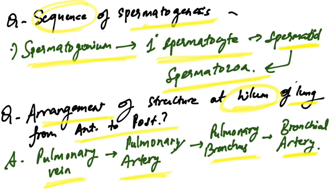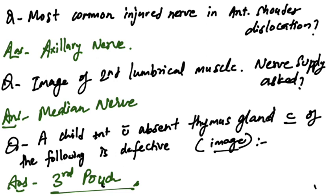The most commonly injured nerve in anterior shoulder dislocation is the axillary nerve.